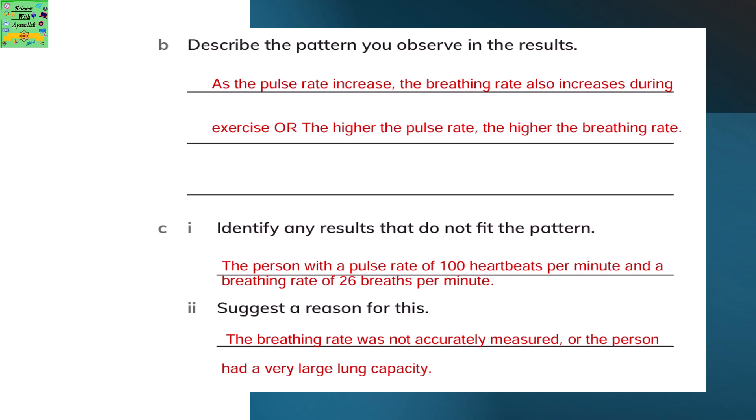Identify any results that do not fit the pattern. The person with a pulse rate of 100 heartbeats per minute and a breathing rate of 26 breaths per minute does not fit the pattern. A suggested reason is that the breathing rate was not accurately measured, or the person had a very large lung capacity.